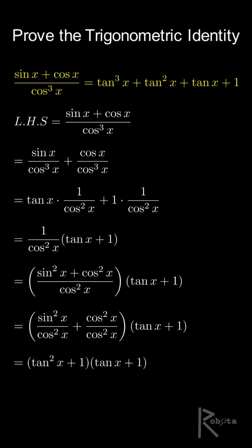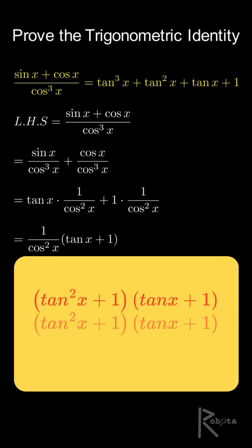Now multiply that expression with the earlier term we factored. So we have tan squared x plus 1 multiplied by tan x plus 1. Now expand the multiplication.